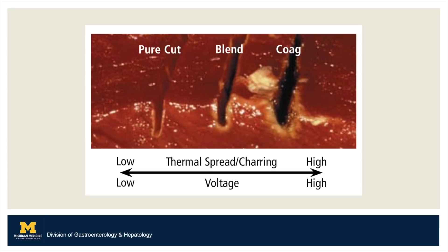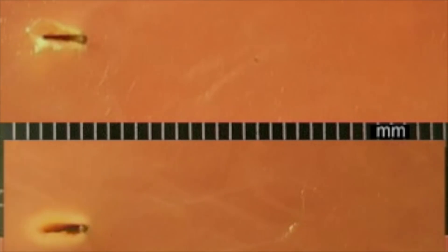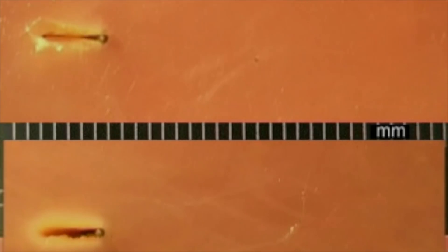This in vivo depiction demonstrates the hybrid effect that is achieved by using a blended cut. A pure cut current limits charring and achieves this with limited voltage. Coagulation current results in greater charring due in part to the higher voltage. Shown here on artificial tissue, we can see a side-by-side representation of the lowest effect — in our case effect 1 seen above — and the highest effect — in our case effect 4 seen below — and how this defines the tissue effect.